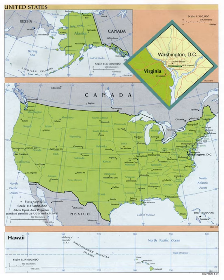In Virginia, cities are completely independent from the county in which they would otherwise be a part. In some states, particularly in New England, towns form the primary unit of local government below the state level, in some cases eliminating the need for county government entirely.